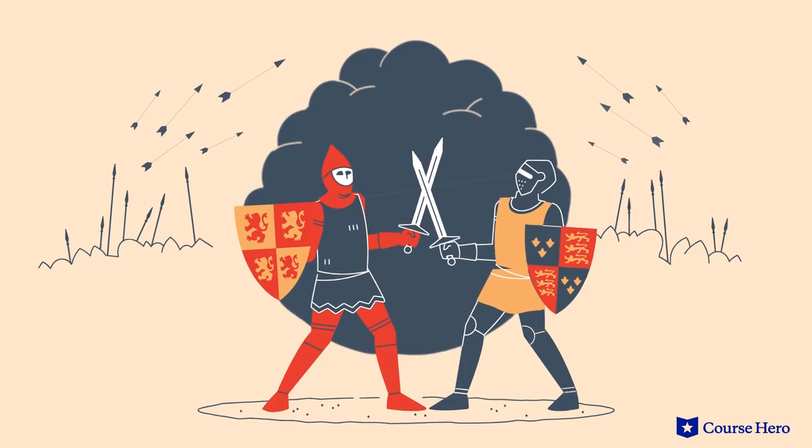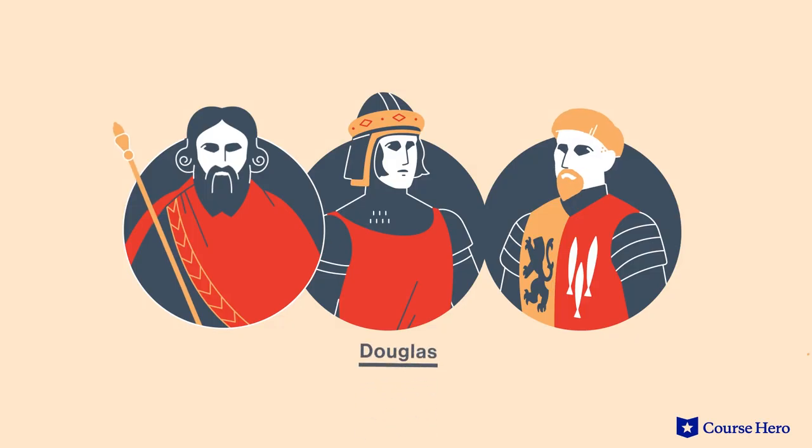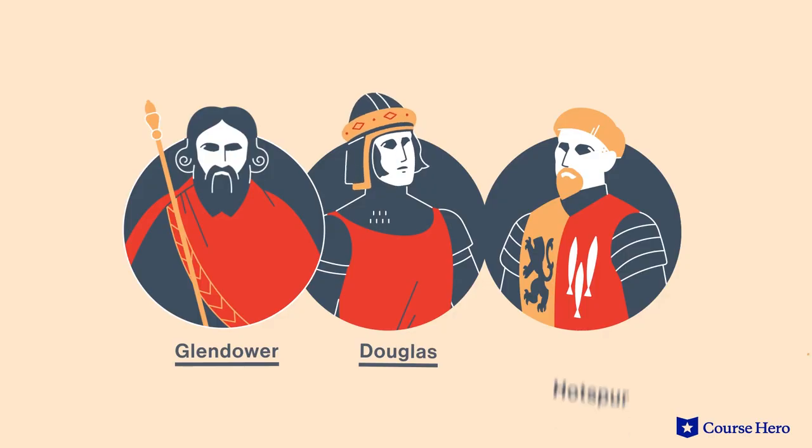Welsh and Scottish forces are rebelling against King Henry IV of England. Douglas leads the Scottish rebels and Owen Glendower leads the Welsh. In a recent battle, Hotspur — the name of Henry Percy — captured some rebel leaders while fighting on the side of the king. However, Hotspur refuses to send the prisoners to the king as required, so the king summons him to explain. This first scene acts as a prologue and introduction, providing contextual information on action the audience doesn't see and sketching in core relationships, both political and interpersonal.